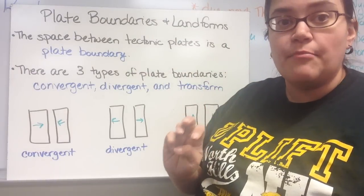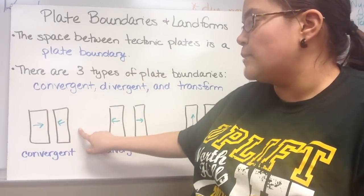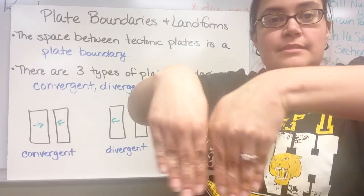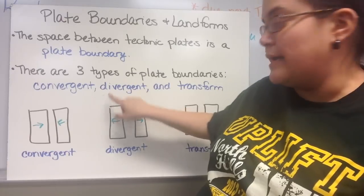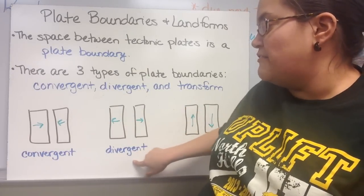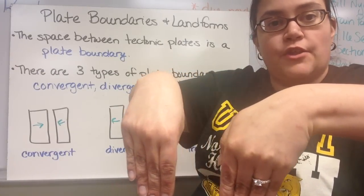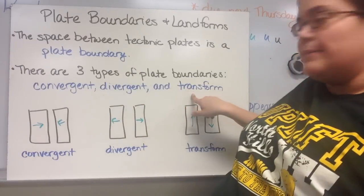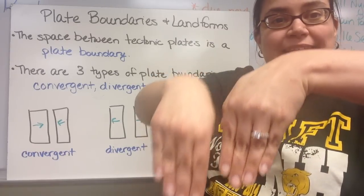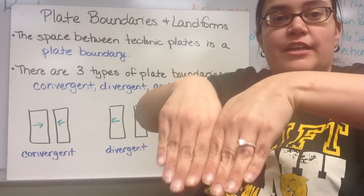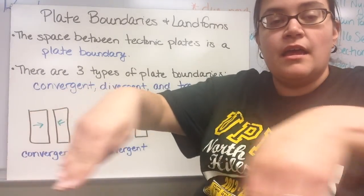There are three different types of plate boundaries, and it depends on what way the plates are moving. The first type is convergent, and that is where two plates are moving towards each other. Divergent is kind of like divide, so those plates are moving away from each other. The last type is transform — the amount of space between them is not changing; they're sliding past each other and can create friction between the two plates. So convergent moves towards, divergent is away, and transform is past each other.